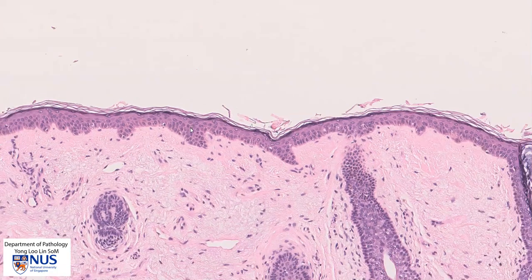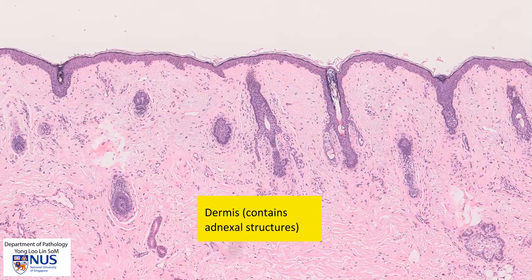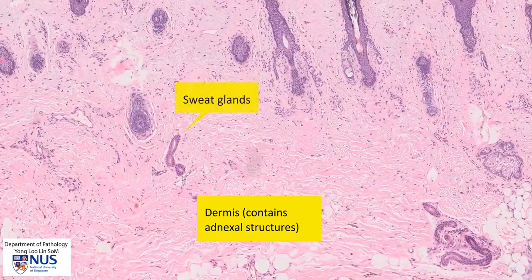Below this we have the dermis, which is mostly pink because it is composed of collagen, and this contains the adnexal structures such as the pilosebaceous units and some of the sweat glands.